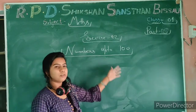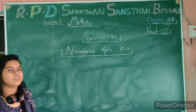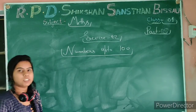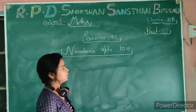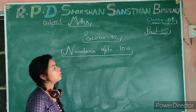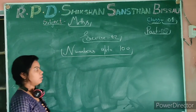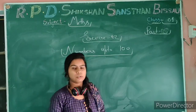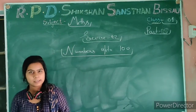We know the counting as 20, 30, 40, 50, 60, 70, 80, 90 and 100. In today's class, Exercise 2, we will learn counting 1 through 100.